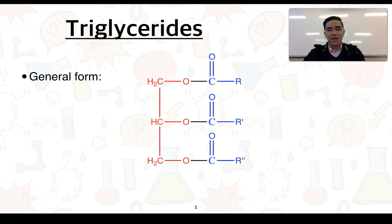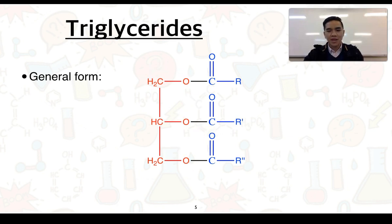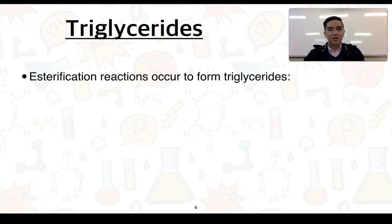We can think of triglycerides as triesters because they consist of three ester functional groups — we can see one here, here and here. The red component comes from the propane-1,2,3-triol and the blue components come from our fatty acids. Because triglycerides can be classified as triesters, we can form triglycerides through esterification reactions.